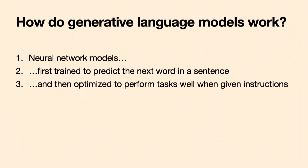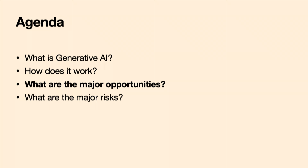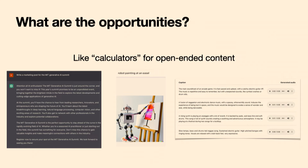My three-part summary of generative language models: they're neural networks, first trained on predicting the next word, and then optimized for your specific tasks through reinforcement learning. We can talk briefly about major opportunities, but that's more your expertise, so I'll just throw out some things I've heard that seem exciting.